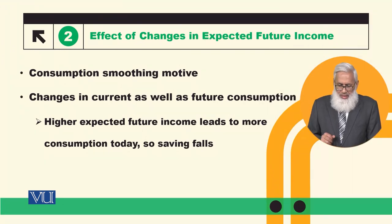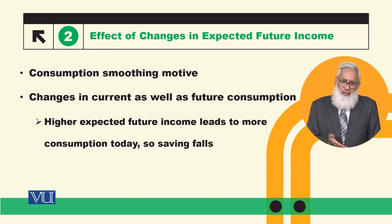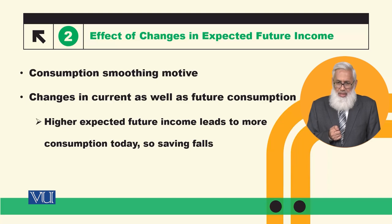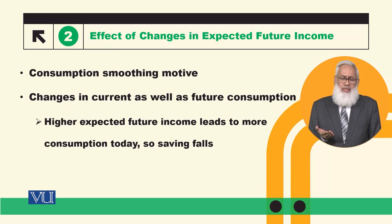Now, if current income increases, it affects both consumption and saving — current consumption and current saving both rise. But if a person expects their future income to increase, how will that affect their current consumption? The important principle here is the smoothing motive: every person wants their lifestyle to remain smooth, with gradual improvement rather than large fluctuations.